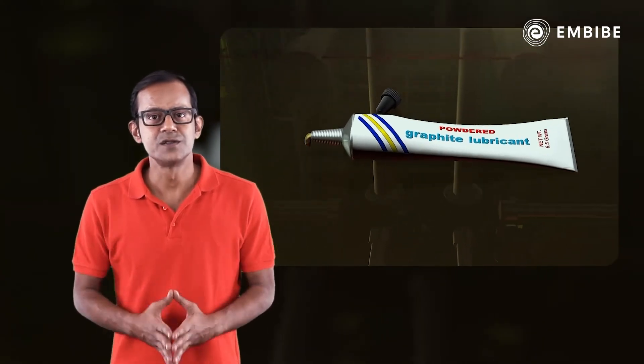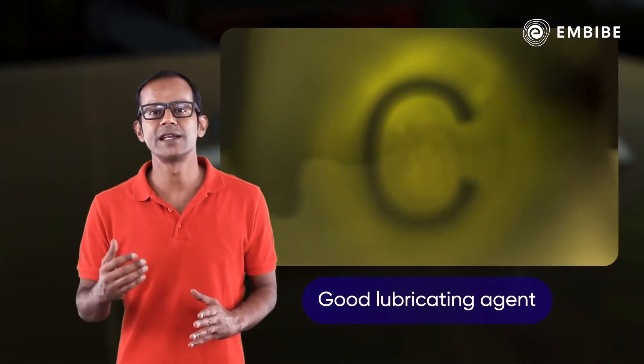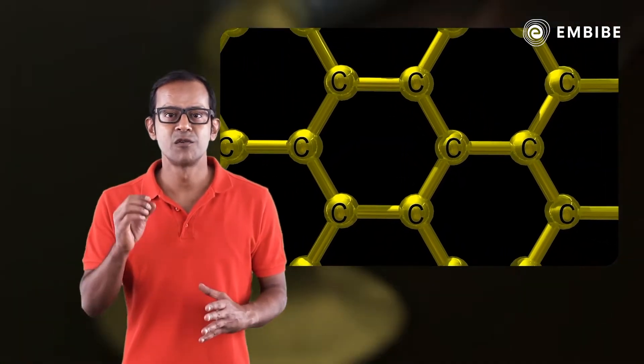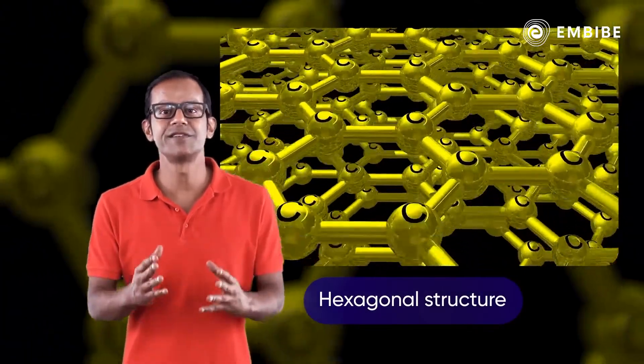Graphite is soft and slippery and is thus used as a good lubricating agent. In graphite, carbon atoms form a hexagonal structure which are held in different layers.